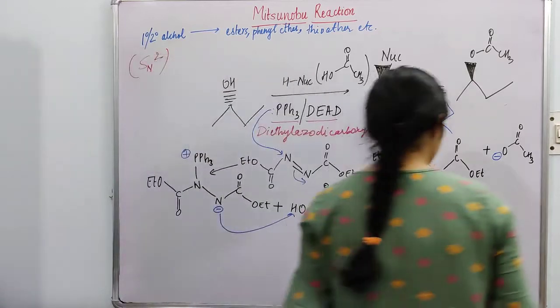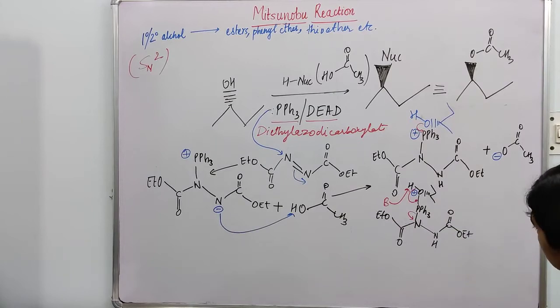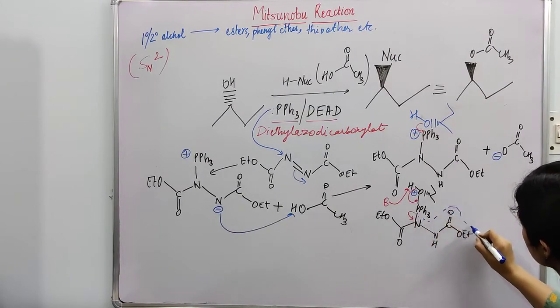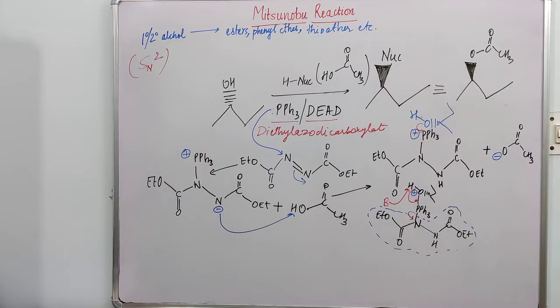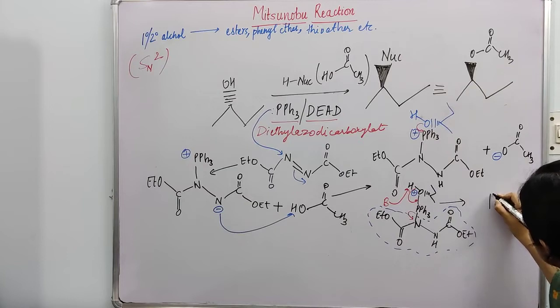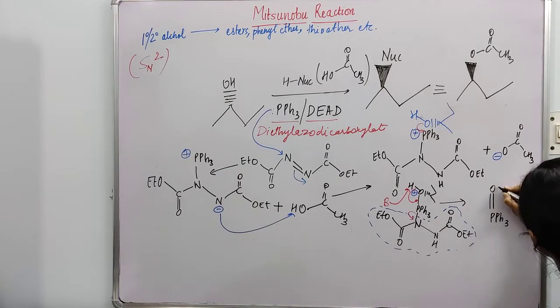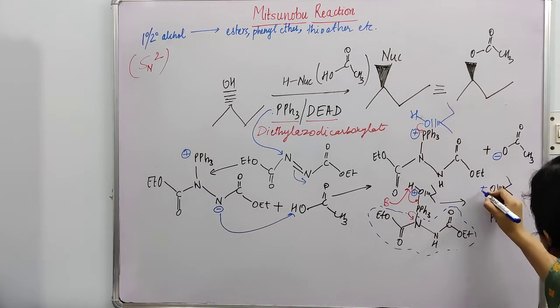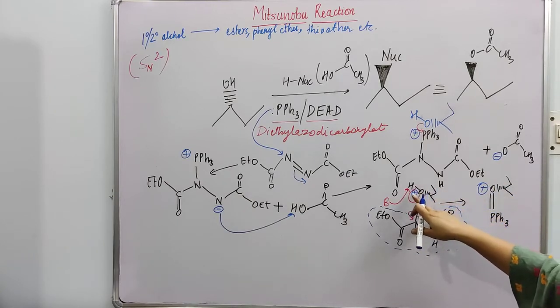So what is exactly forming here is, I will make a dotted line for what is leaving. This is the leaving group here, and we will be left with this structure, and then this oxygen will have a positive charge. Now we will see why this oxygen has a positive charge when it is losing a proton here.